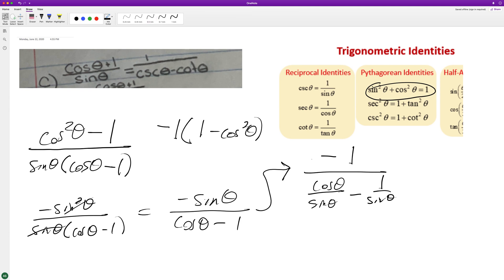And you get sine on top again, so this is cotangent and this is cosecant. But this negative 1 cancels out these signs, so we end up with 1 over cosecant theta minus cotangent theta, and that's it.